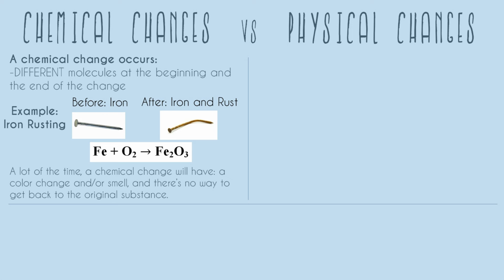When you're doing problems asking you to tell the difference between chemical and physical, the easiest thing is to think to yourself: can I go backwards? Can I have a rusty nail and go back to having just a clean nail? The answer is no. Even if you clean off that nail and it looks kind of shiny again, you're still going to see all that rust on your rag. You aren't able to actually turn that rust back into iron — there's really no way to go back.